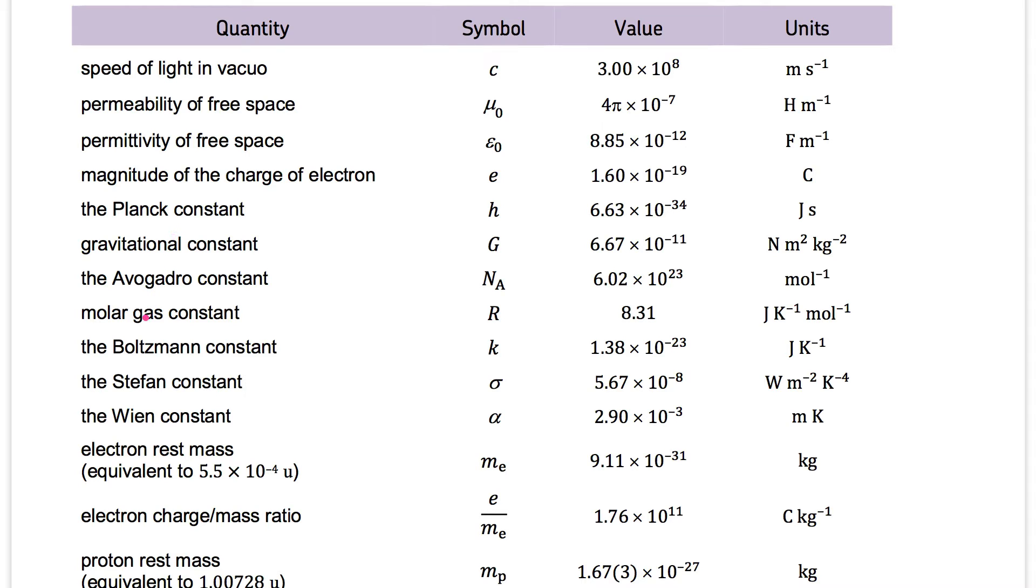The molar gas constant capital R is 8.31 joules per Kelvin per mole. The Boltzmann constant, small letter k, has the value 1.38 times 10 to power minus 23 and this one is joules per Kelvin.